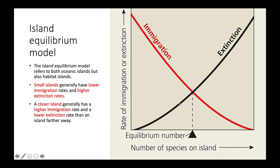If we look at this graph relating the rate of immigration and extinction to the number of species on a particular island, we can see that with the extinction curve, as we increase the number of species on an island, the rate of extinction increases due to increased competition for resources. With the immigration curve, as we increase the number of species on an island, we're going to have less immigration because organisms have less incentive to migrate to an island with a dense, competitive community. Where these two curves — the immigration and extinction curves — intersect is what we call the equilibrium number of species, where immigration equals extinction and the number of species on the island is no longer changing.